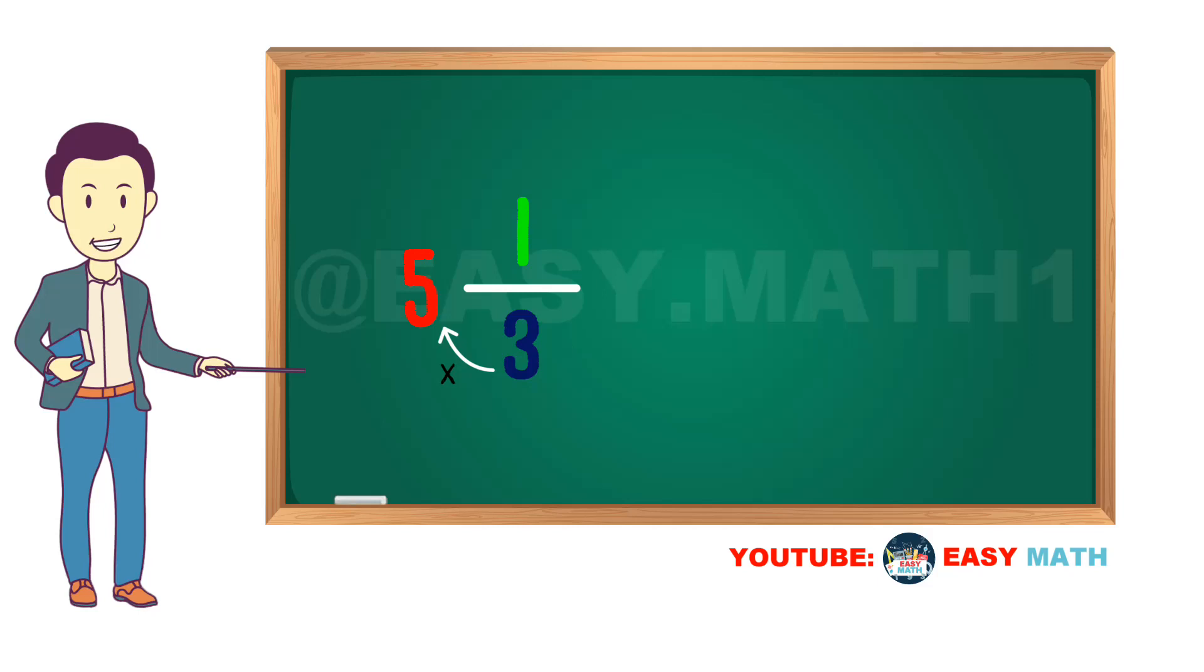And then we add our numerator 1 to that. Thus we can convert five and one third to 16 over 3.